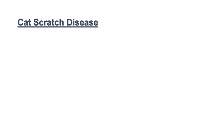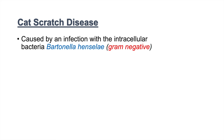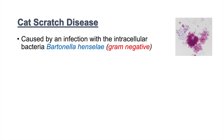This lesson is about cat scratch disease, also known as cat scratch fever. Cat scratch disease is an infection caused by the intracellular bacteria known as Bartonella henselae, which is a gram-negative bacteria. This is why the disease can also be referred to as Bartonellosis, because of an infection with Bartonella.